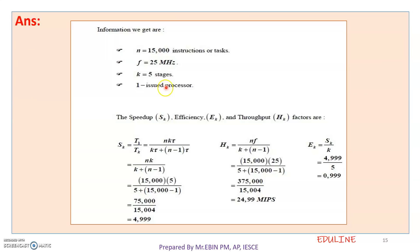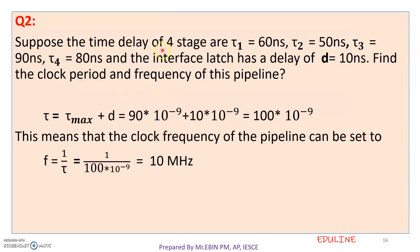We calculate efficiency as NK divided by (K + N − 1), and substitute our values. Suppose the time delays of four stages are: tau1 = 16 ns, tau2 = 15 ns, tau3 = 90 ns, tau4 = 80 ns. The latch delay is 10 ns. Find the clock period and frequency of this pipeline. The clock period is T = tau_max + D.